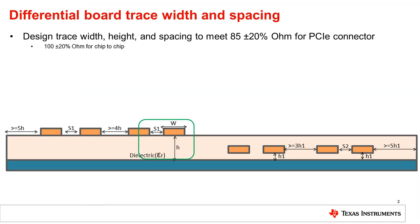The PCIe specification calls for 85 ohm plus or minus 20% differential trace impedance. This is done to match the connector trace impedance. On the other hand, if the PCIe signals are on the same PCB with no connector, then we need to have a closely coupled 100 ohm plus or minus 20% differential trace, since CPUs or ASICs are typically designed for 100 ohm impedance.